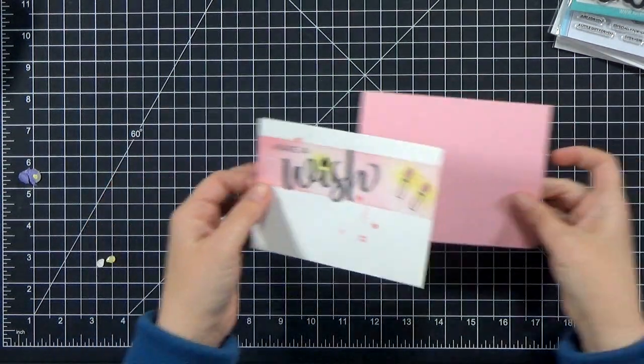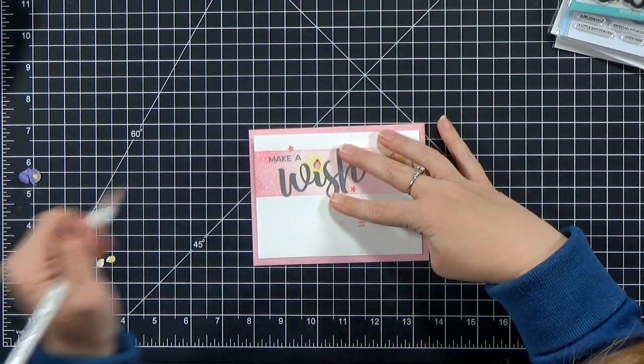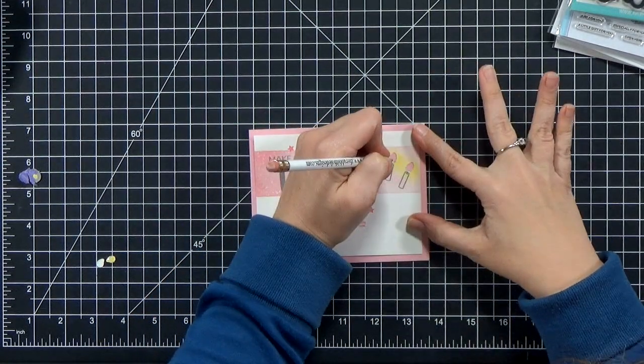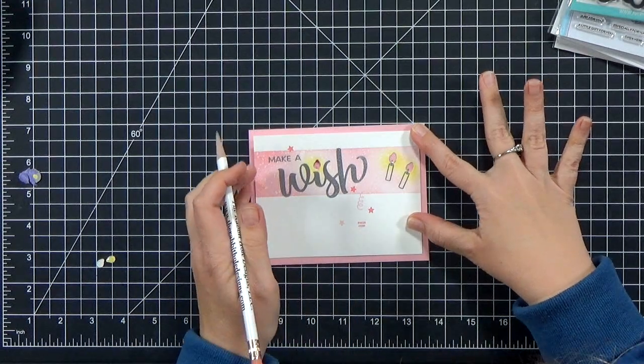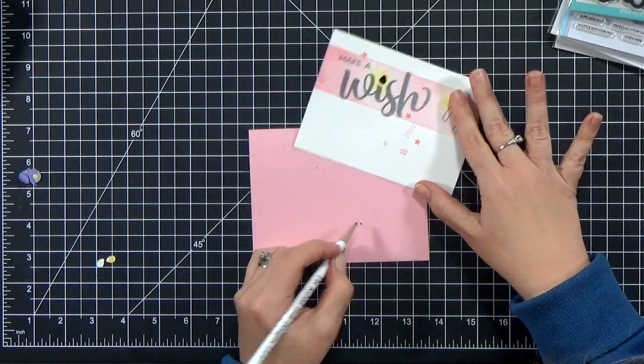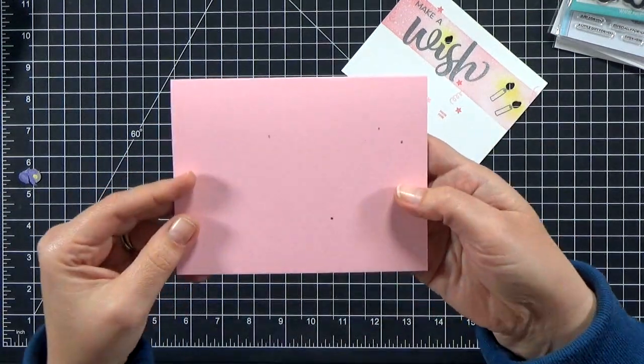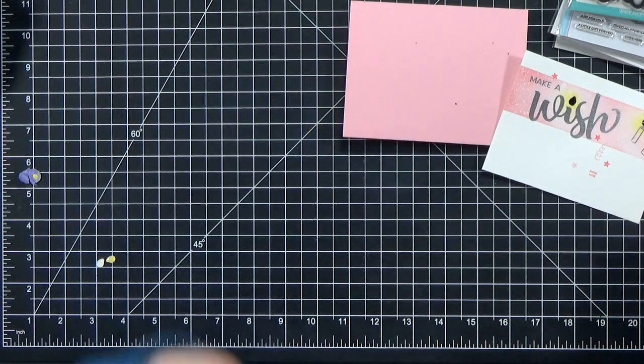Now I'm going to bring the card front to my card base. You can see I've already trimmed it down a little bit. I'm going to grab a pencil and I'm going to mark through those windows where the bottom of each light is. I'm also going to hover my pencil above where I've stamped Push Here. Then I can move that panel out of the way and mark a little dot. That's where I will put the button for my light.